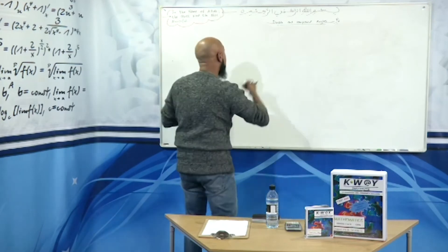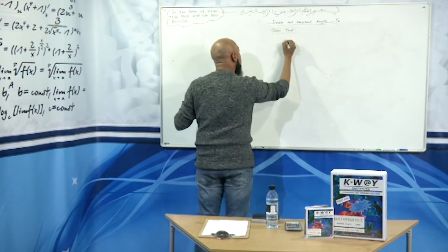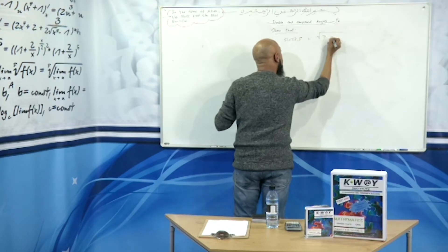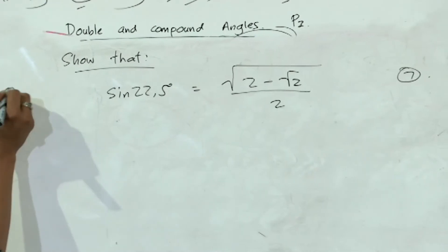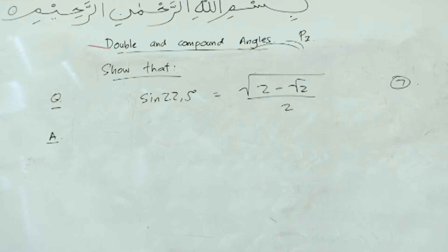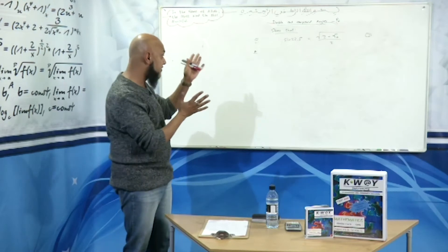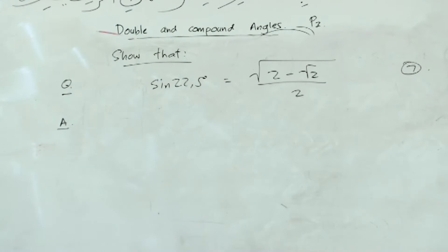What's the next question? Show that sin(22.5°) is equal to the square root of 2 minus root 2, all over 2. This is a 7-mark question. Now, lots of theory is going to go into this, so you need to pay attention. Take that problem down — prove or show that sin(22.5°) is equal to the square root of 2 minus root 2, all over 2, for 7 marks.